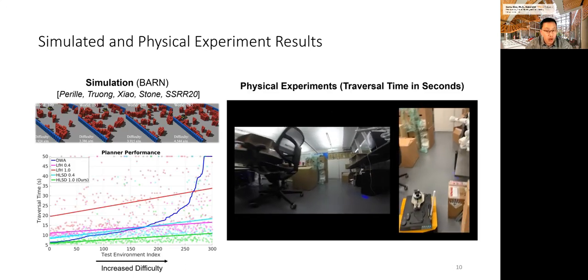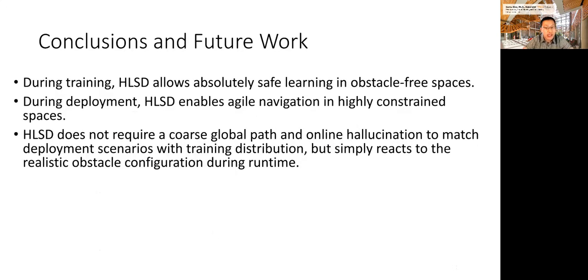In conclusion, HLSD allows absolutely safe learning in obstacle-free spaces during training. In comparison to imitation learning and reinforcement learning, both of which are difficult in highly constrained spaces, the LFH framework is much safer and more sample efficient. During deployment, LFH framework can enable agile navigation in highly constrained spaces without the increased computational overhead of classical sampling based and optimization based methods. Compared to the original LFH work, the HLSD work in this paper does not require a coarse global path and online hallucination to match deployment scenarios with training distribution, but simply react to the realistic obstacle configuration during runtime.